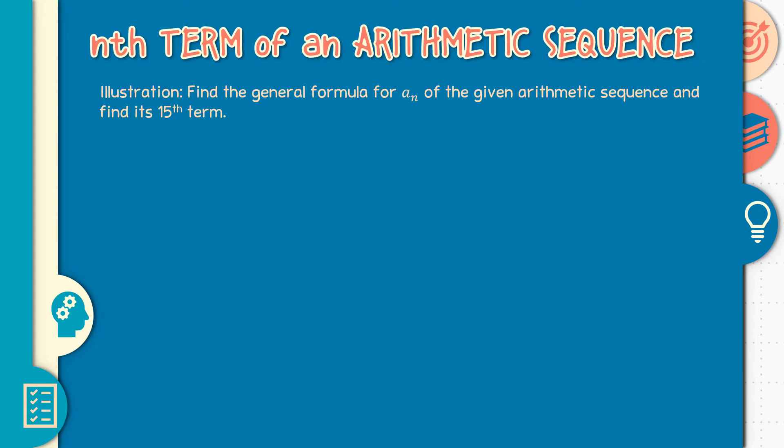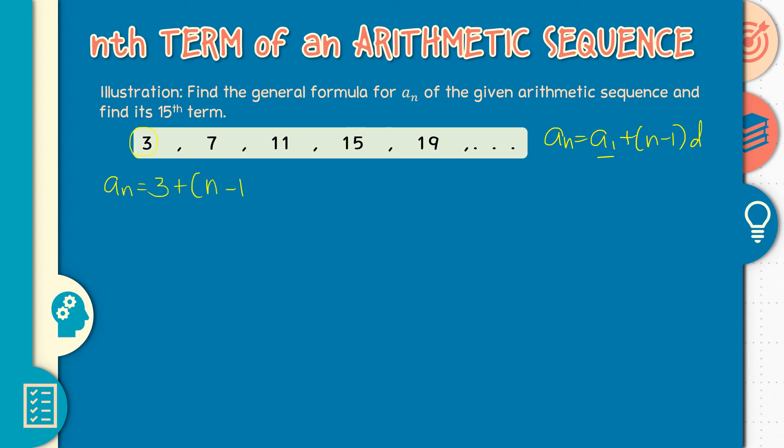Next, find the general formula for a_n of the given arithmetic sequence and find its 15th term. So tayo naman ang magbibigay ng formula or ng rule. Remember our formula for the nth term is a_n is equal to a sub 1 plus n minus 1 times d. a_n is equal to a_1, first term, 3. Plus n minus 1. What is our common difference? Yes, 4. Kasi plus 4 ng plus 4. 3, distribute natin si 4. We have 4n. Kasi 4 times n is 4n. And 4 times negative 1 is negative 4. We have 4n. 3 minus 4 is negative 1. So our rule or the formula for nth term is 4n minus 1.